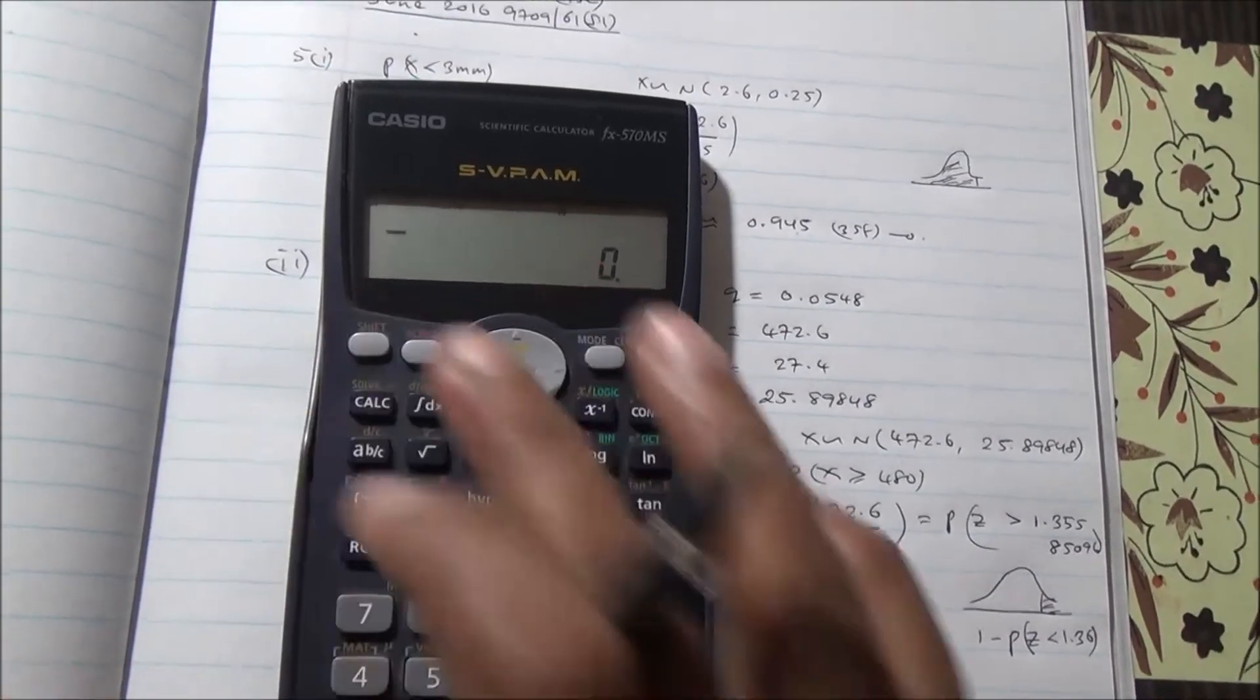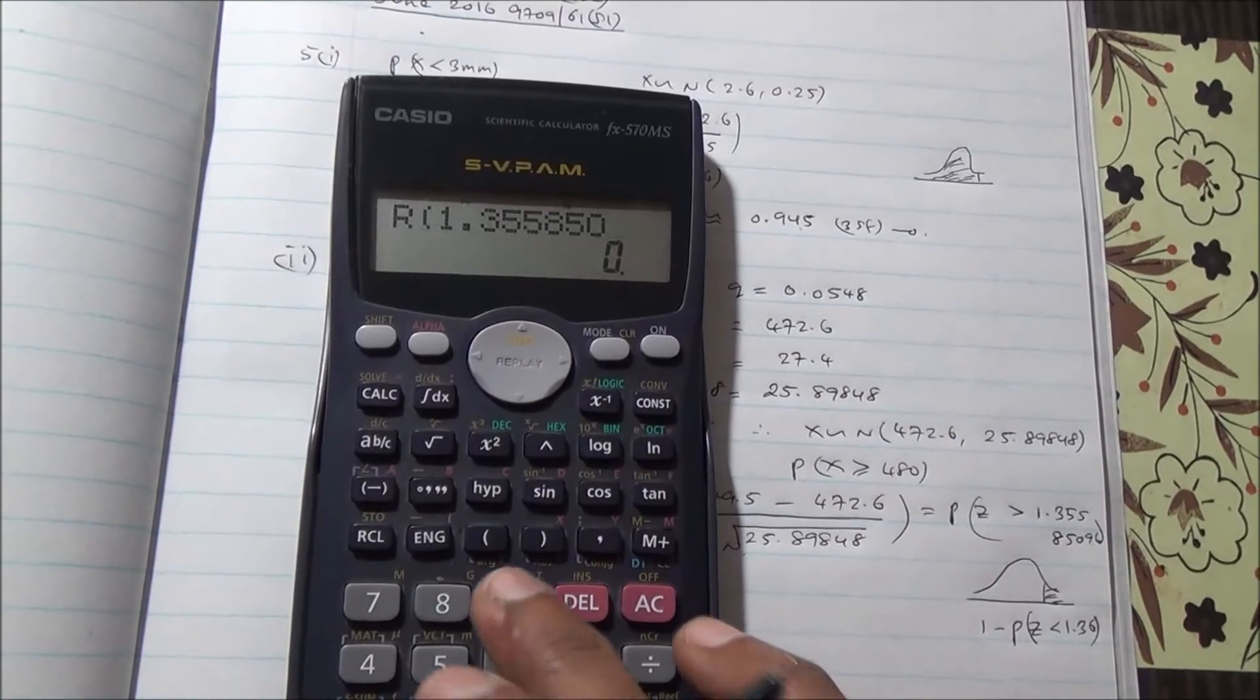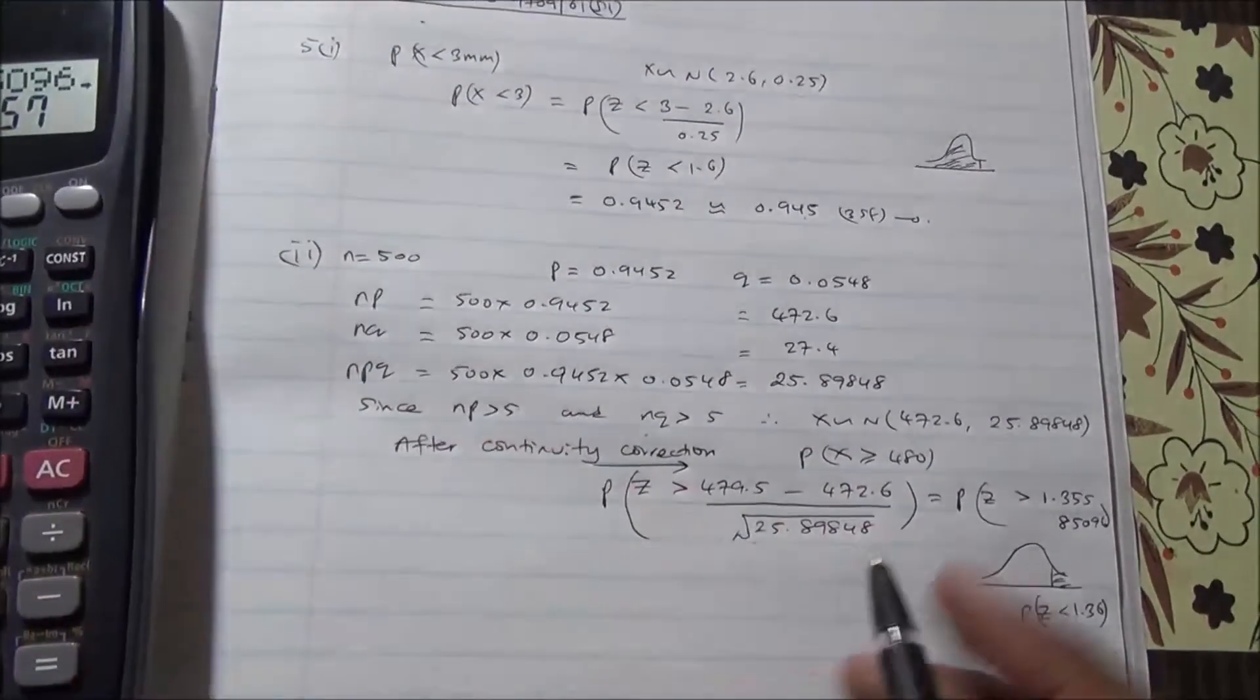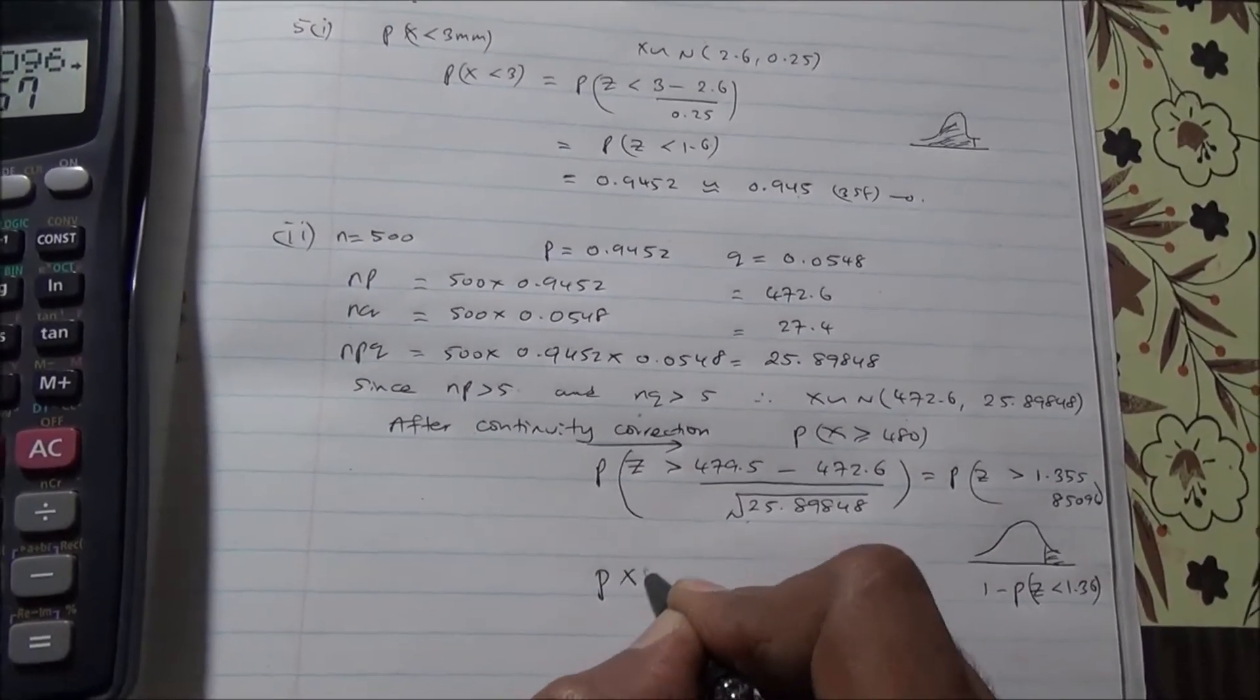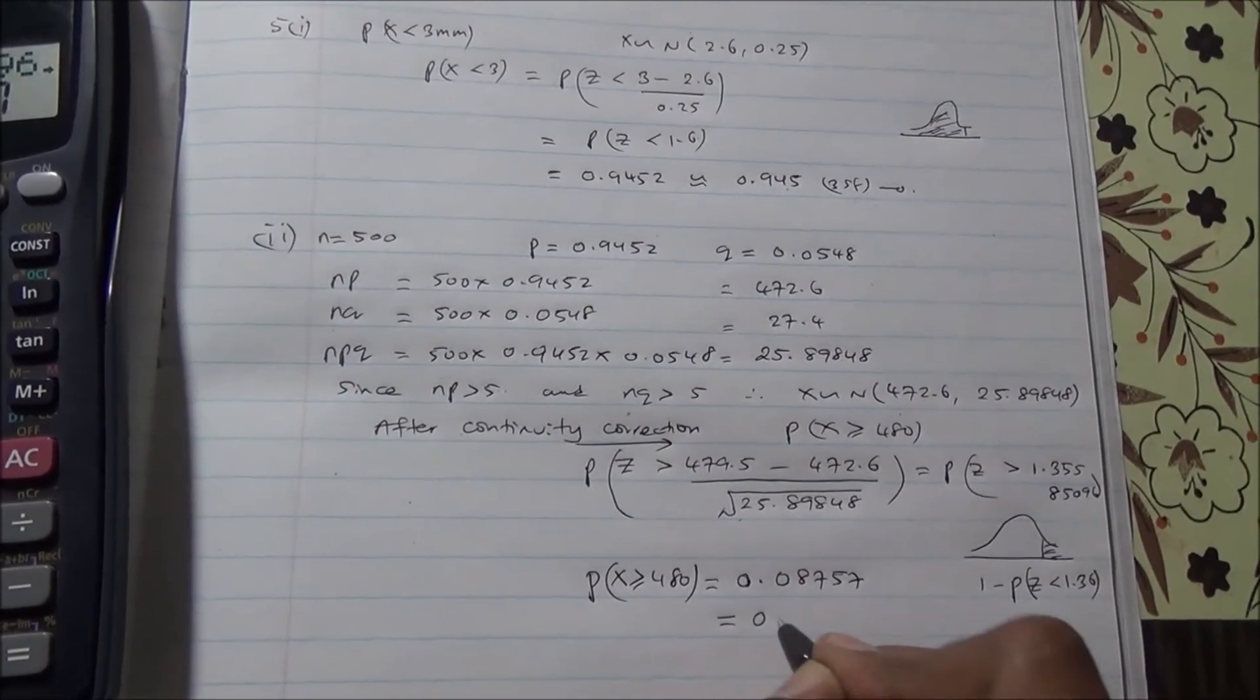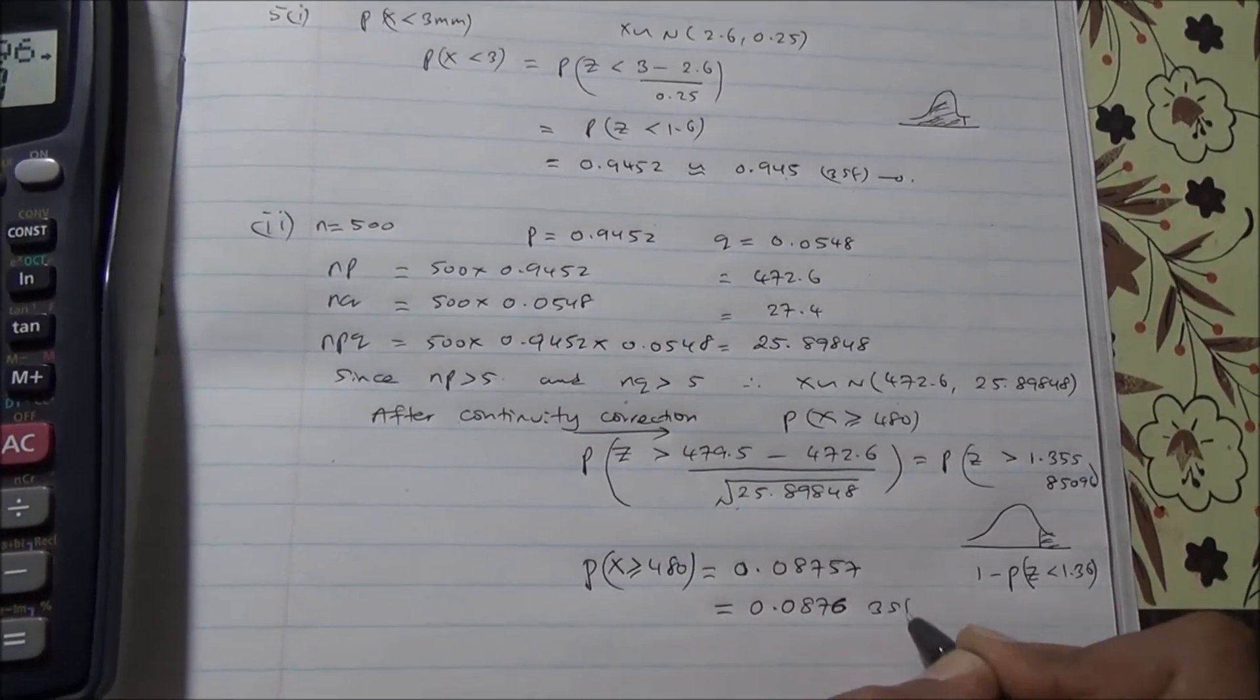Let's put the value 1.35585096. Close brackets. Here we are. That's going to give us 0.08757. Therefore, the probability of X being greater than or equal to 480 is 0.08757, approximately 0.0876 to 3 significant figures.